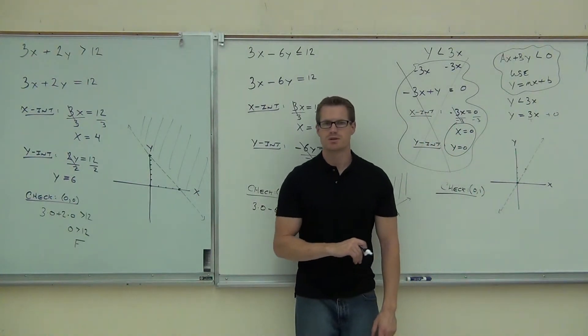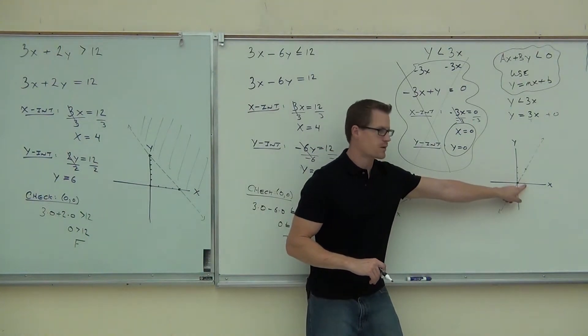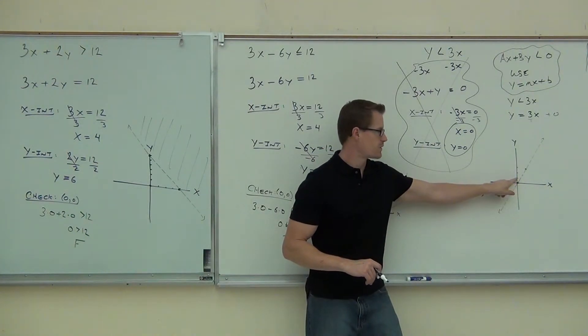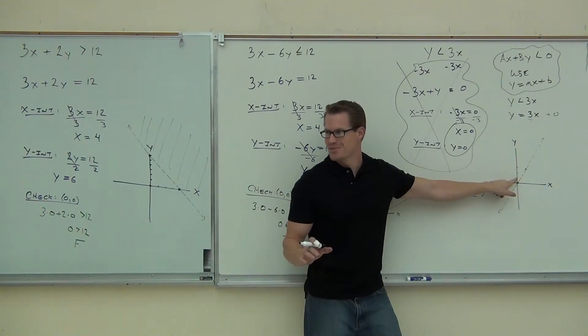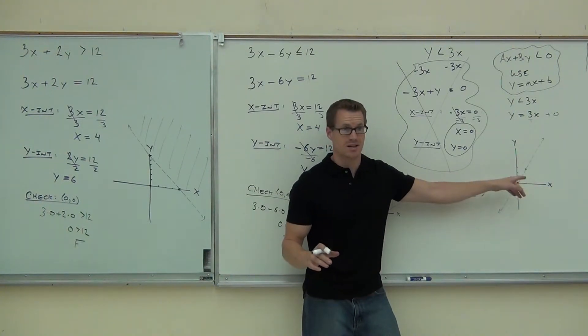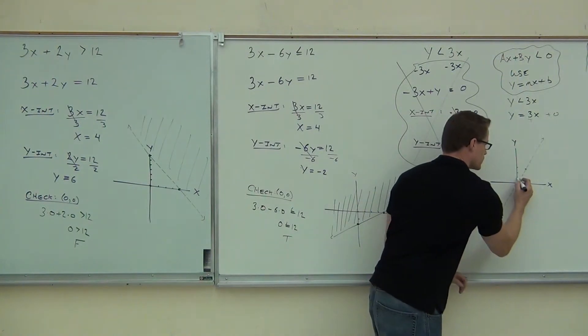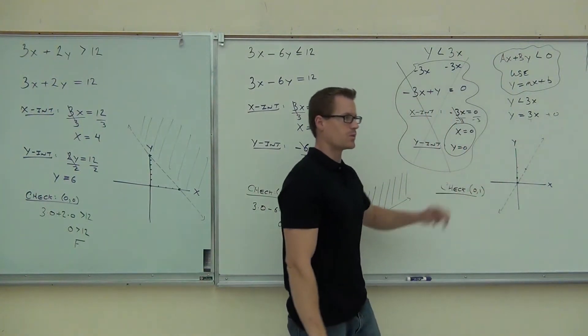Check zero, one. Identify where zero, one is. Look at the board with me, please, real quick. Zero, one. Is this zero, one right there? No. Is this zero, one right there? Yes. Yes, that's zero, one. Don't get those confused, right? Because if you mark down the wrong point, you're going to shade the wrong side of the line. So if I'm using zero, one, I need to make sure I'm checking that point right there. That's the one I'm looking at.